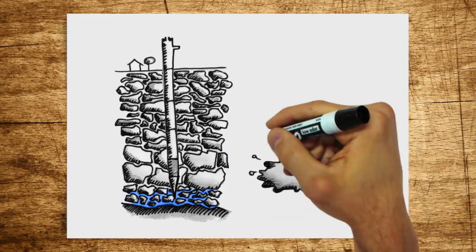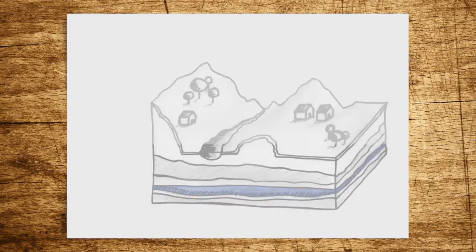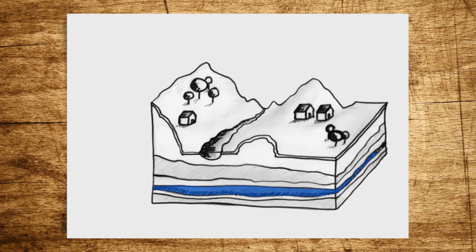Today, about 1.5 billion people use groundwater for water supply worldwide. Groundwater is threatened from several sides. If more water is taken than can be formed again, the water table will fall.